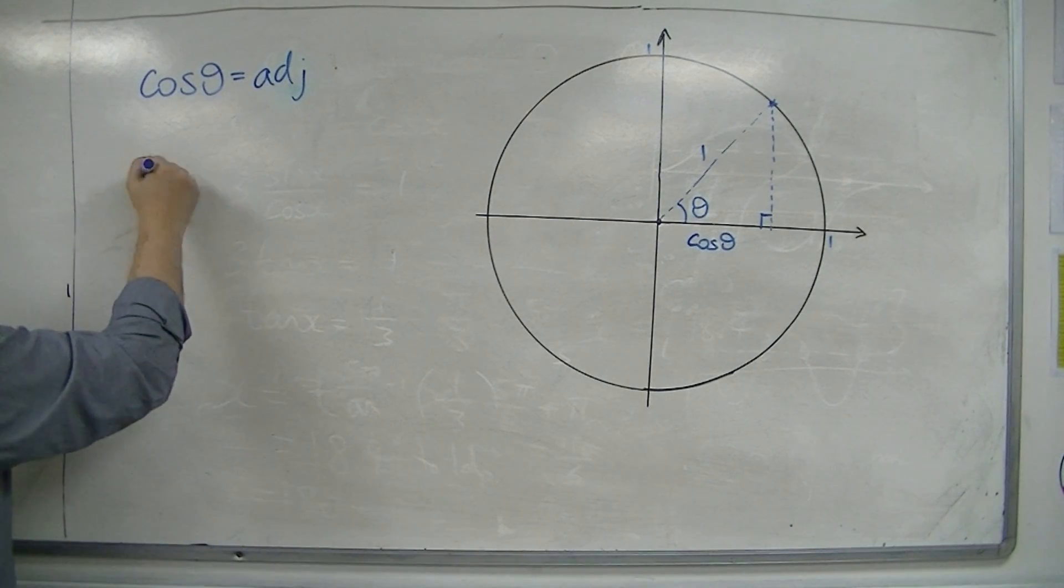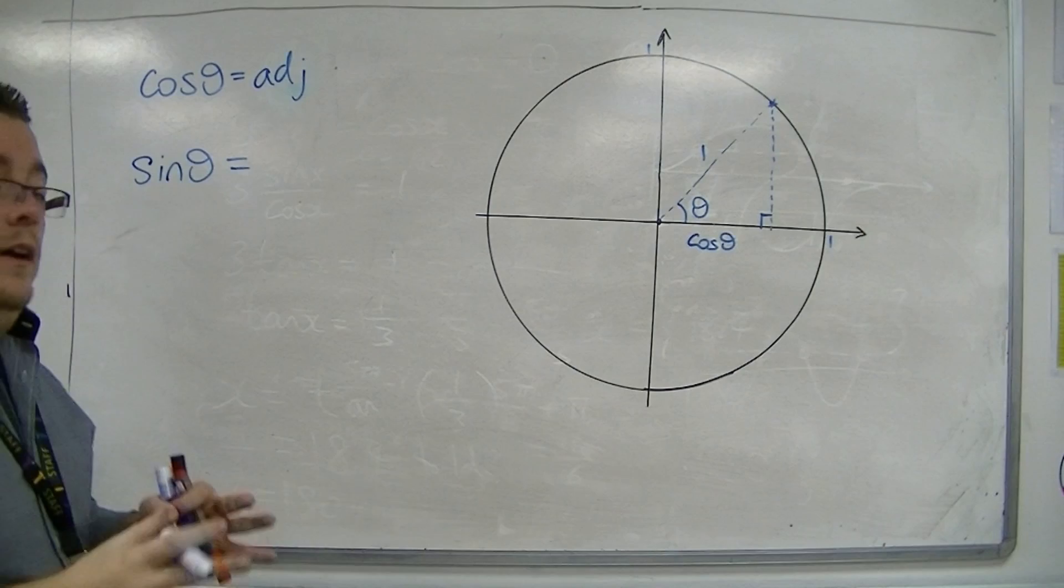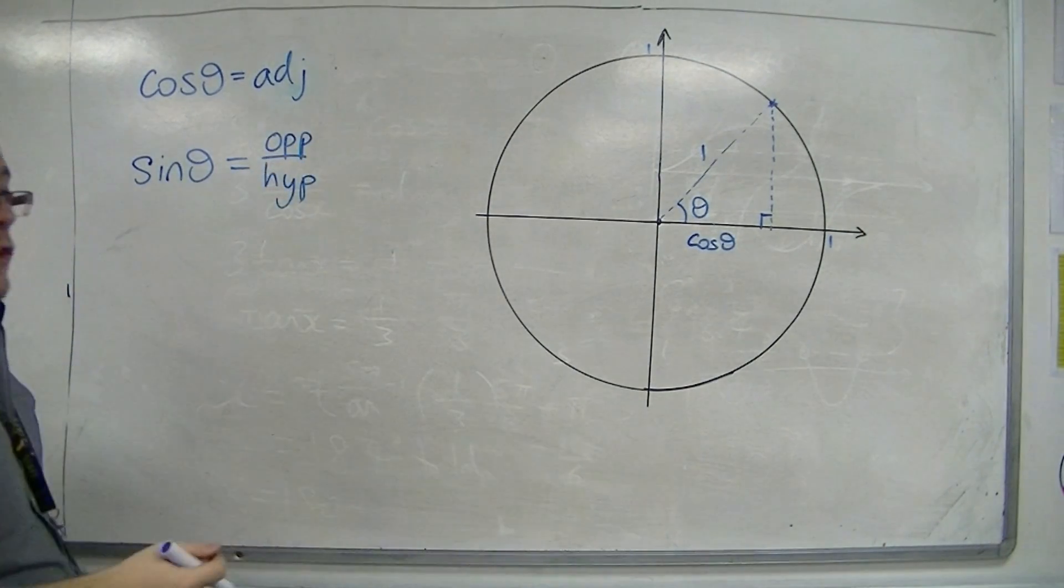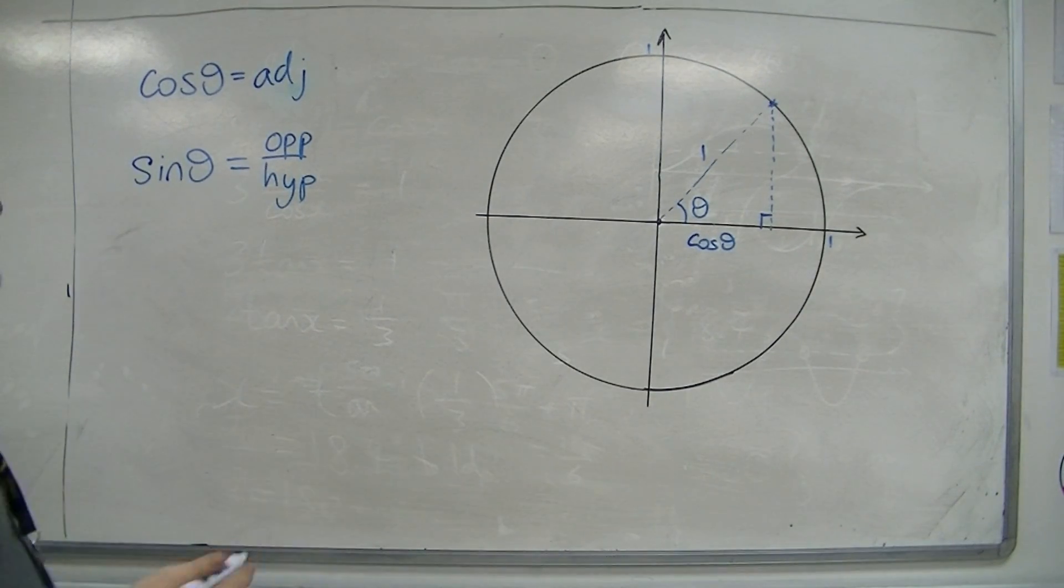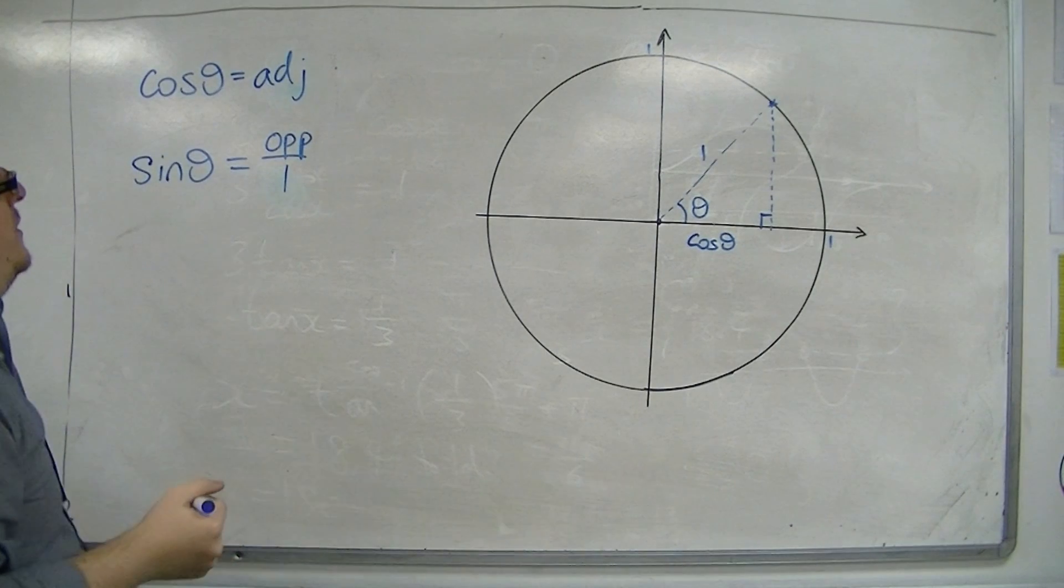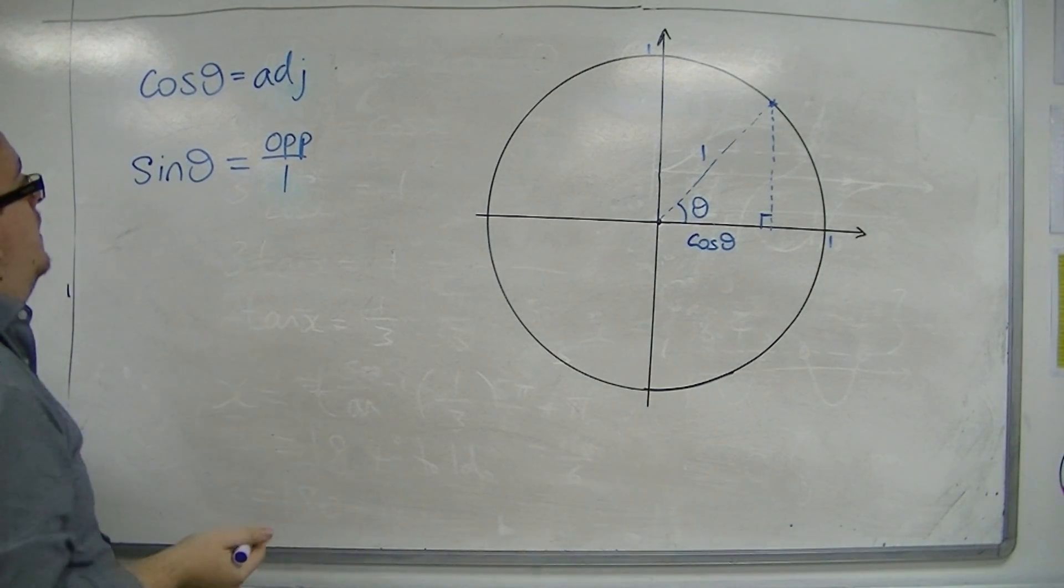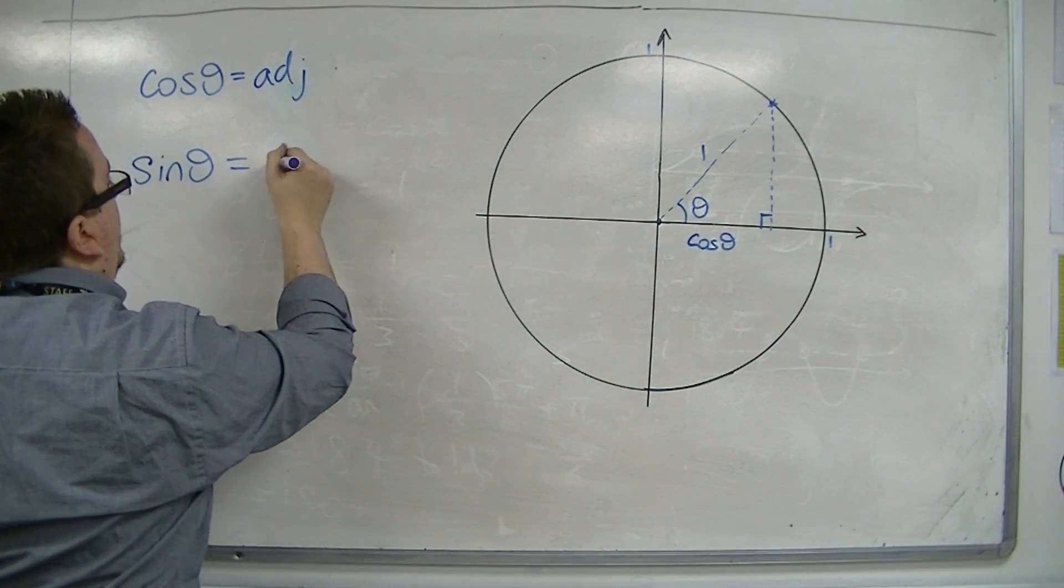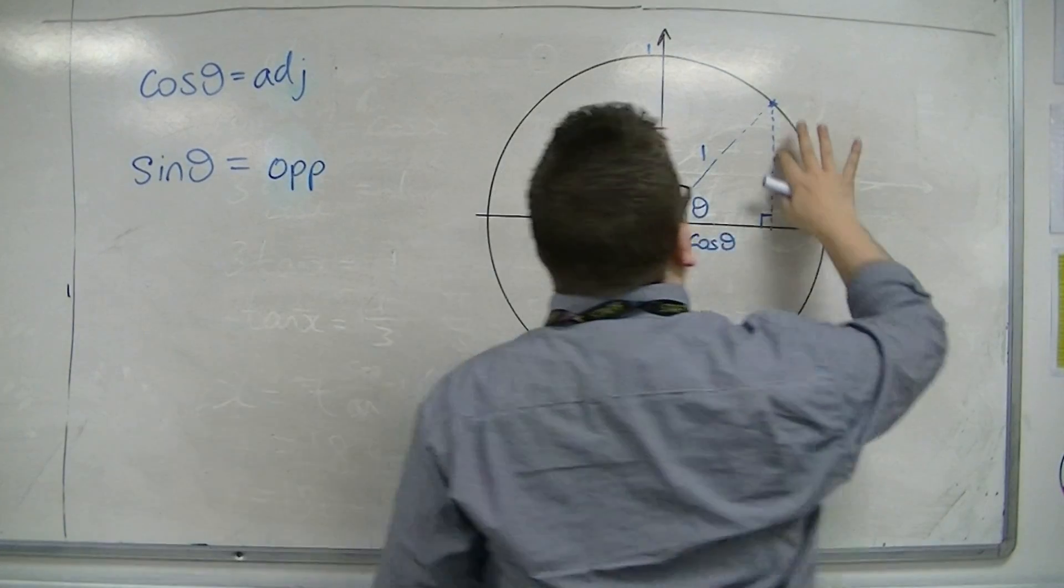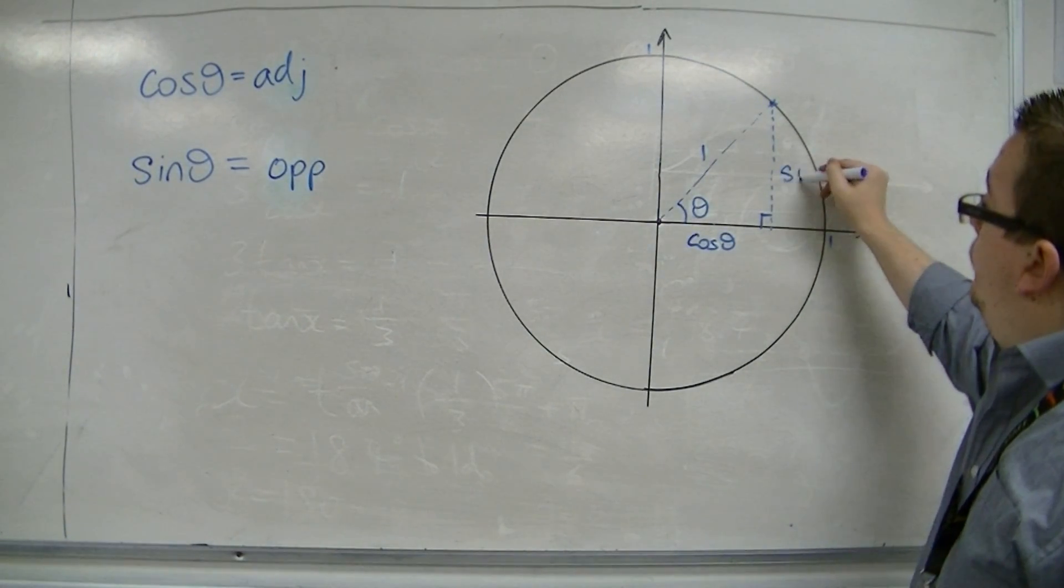In a similar way, sine theta is the opposite over the hypotenuse using SOHCAHTOA. But if the hypotenuse is 1, then sine theta is the opposite over 1 divided by 1. But the opposite divided by 1 is just the opposite. So the opposite side, the height of the triangle, will just be sine of theta.